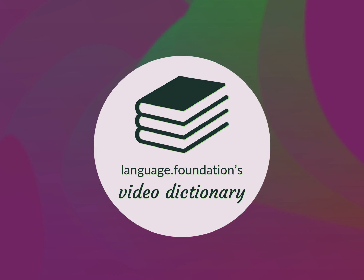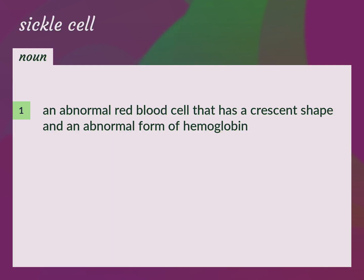Language.Foundation's Video Dictionary, helping you achieve understanding. An abnormal red blood cell that has a crescent shape and an abnormal form of hemoglobin.